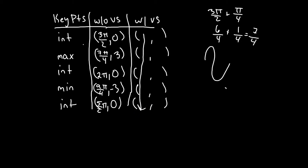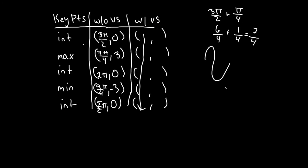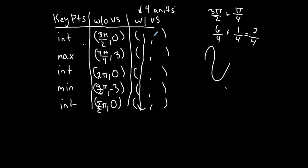The vertical shift was down 4 units, so I subtract 4 from each y-coordinate. Zero minus 4 is negative 4; 3 minus 4 is negative 1; 0 minus 4 is negative 4; negative 3 minus 4 is negative 7; 0 minus 4 is negative 4. Now I have all ordered pairs for the main cycle.